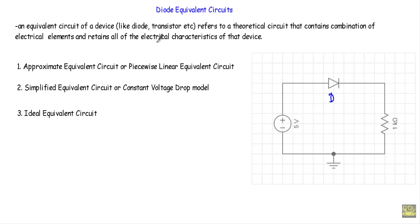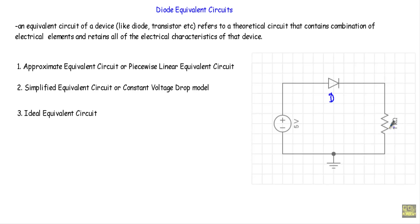In this video I will talk about diode equivalent circuits. For example, let's say I have a simple diode circuit here. This circuit contains a voltage source of 5V, a silicon diode and a resistance of 1kΩ.